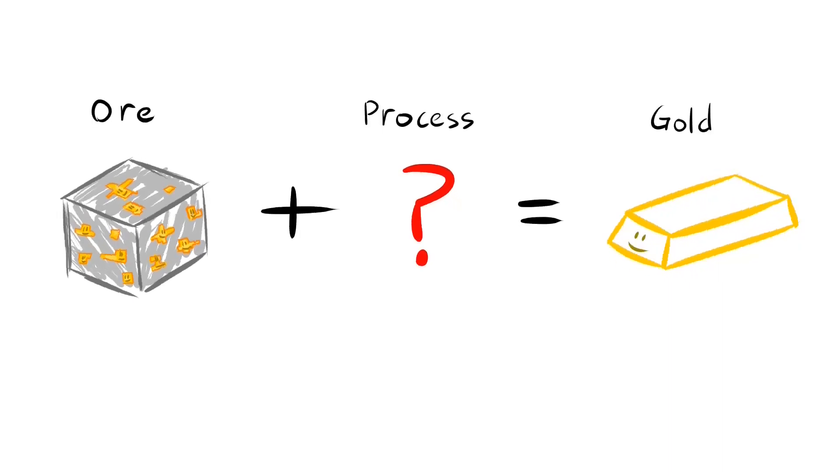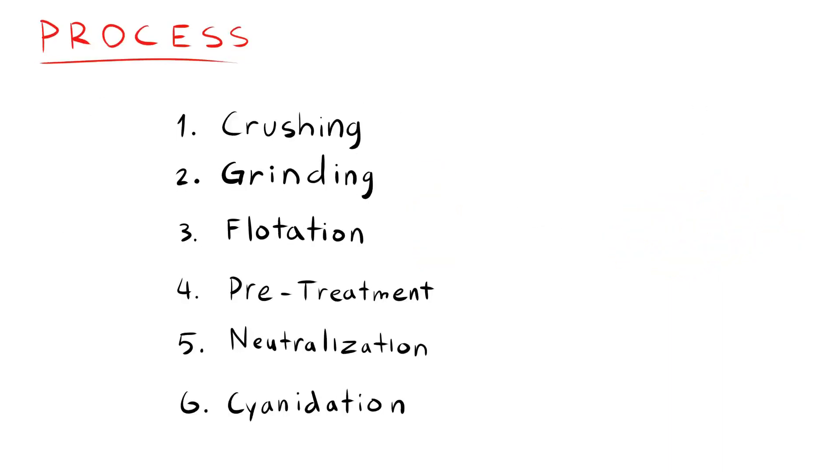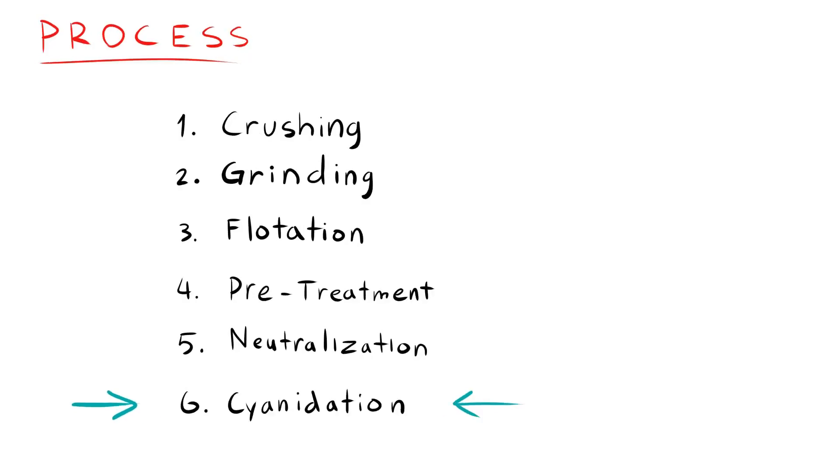Gold processing typically involves these six steps. Cyanidation is where the gold is extracted. Refractory ore requires some special pretreatment. Pretreatment prepares the ore for gold extraction by oxidizing the sulfur and arsenic.